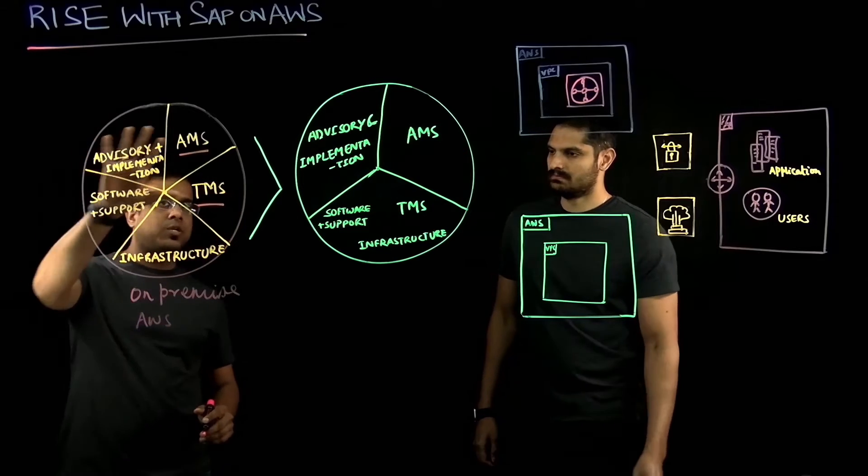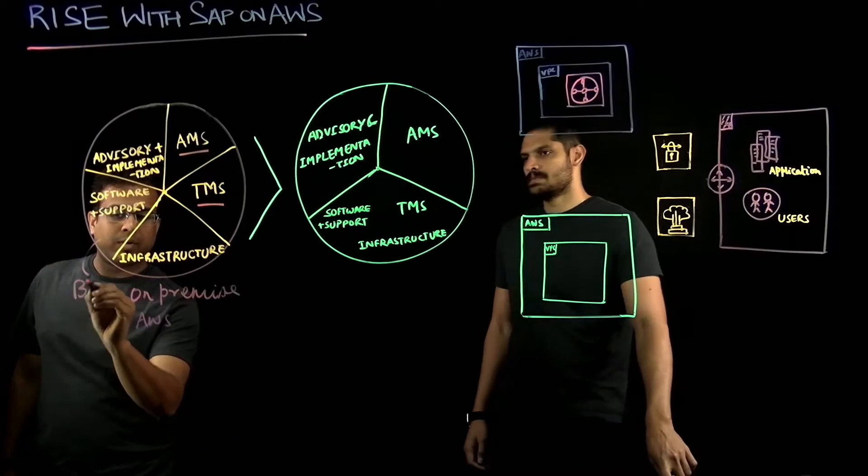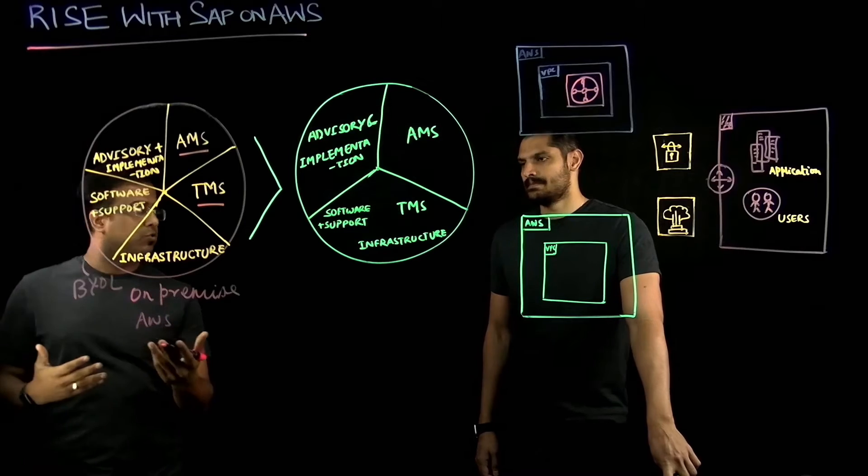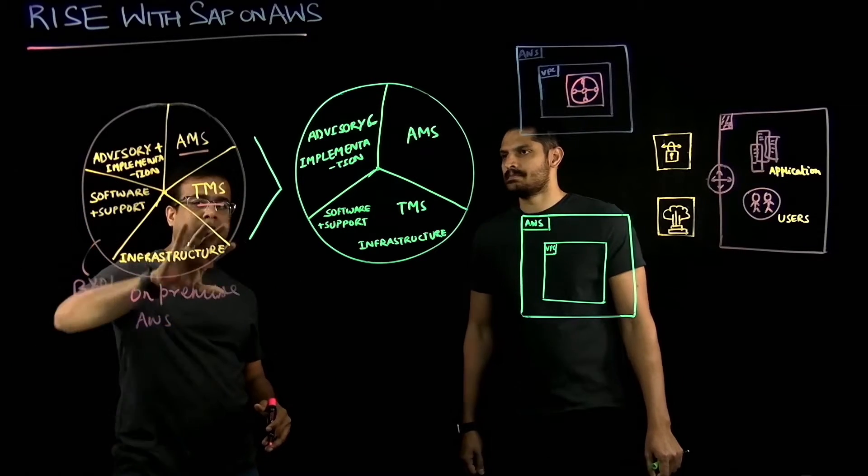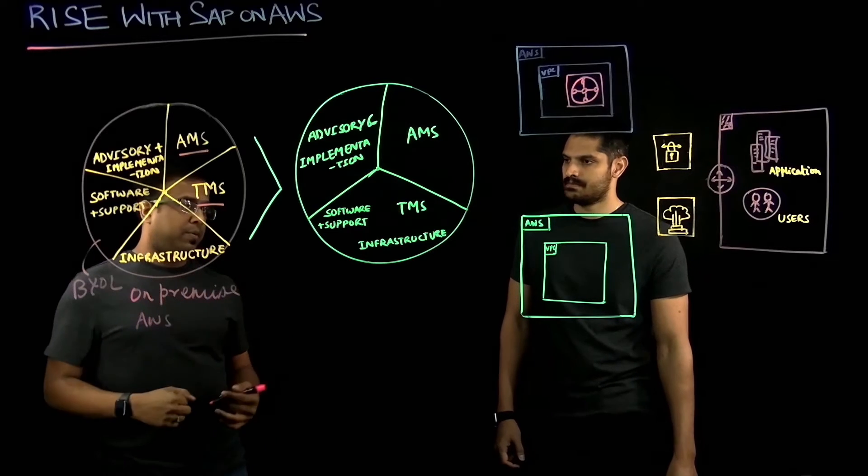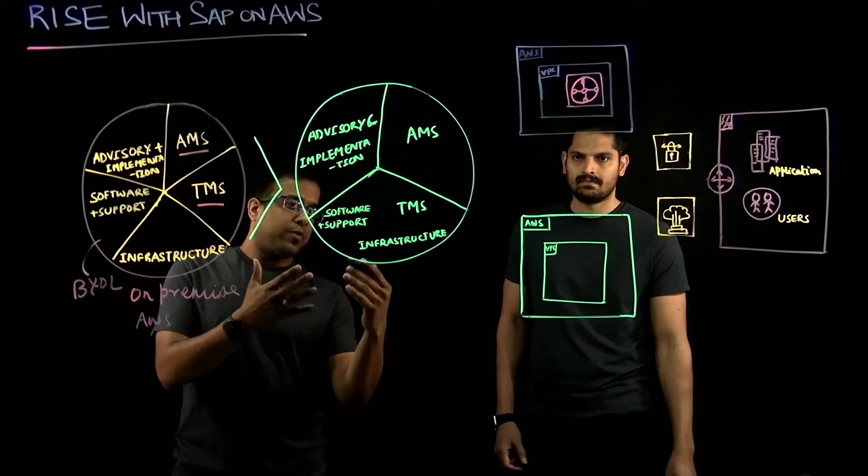So this was a traditional model where customers buy bring your own license from SAP, or what SAP also calls perpetual license, and work with different partners and infrastructure vendors for their SAP implementation.